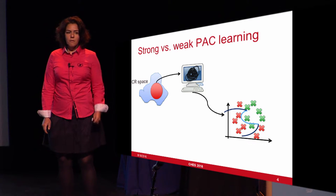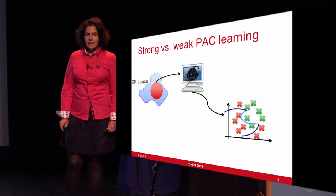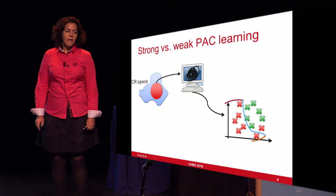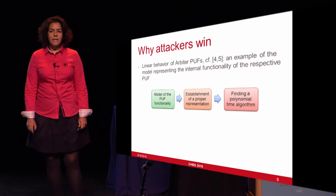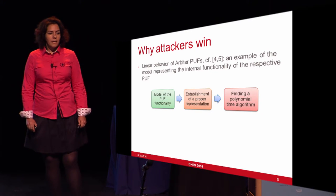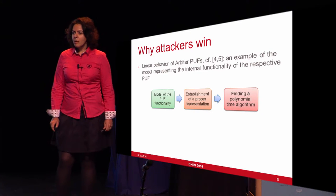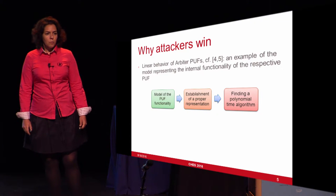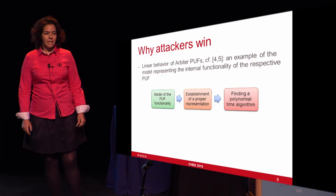By applying boosting techniques, we can convert a weak learner to a strong learner. We tell the machine to focus on the points that are not correctly classified, and step by step, taking into account the model found so far, try to improve it. At the end, we will have our desired model. In practice, it has been shown that whenever the attacker can find a model for the functionality of the PUF, it's easy to establish a proper polynomial-size representation of the PUF and then find a polynomial-time algorithm to PAC learn it.